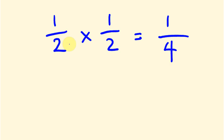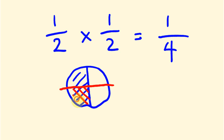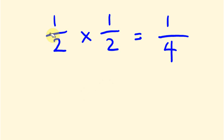If we think about half of a half — imagine a pizza. We have half this pizza, which is our section. But if we then cut that in half again, a half of a half, we're going to end up with a quarter. Hopefully that's a way you might remember how to do that.